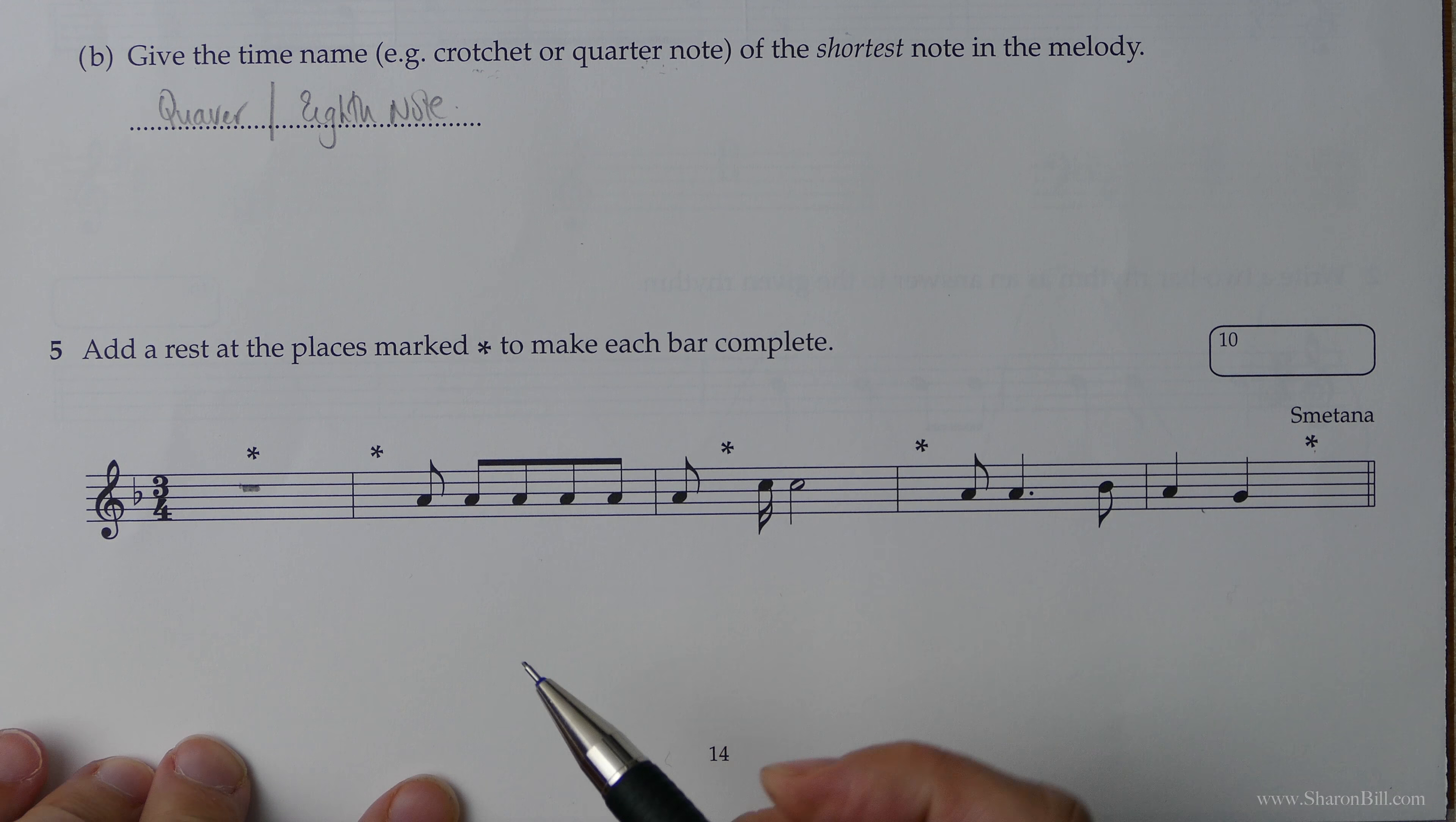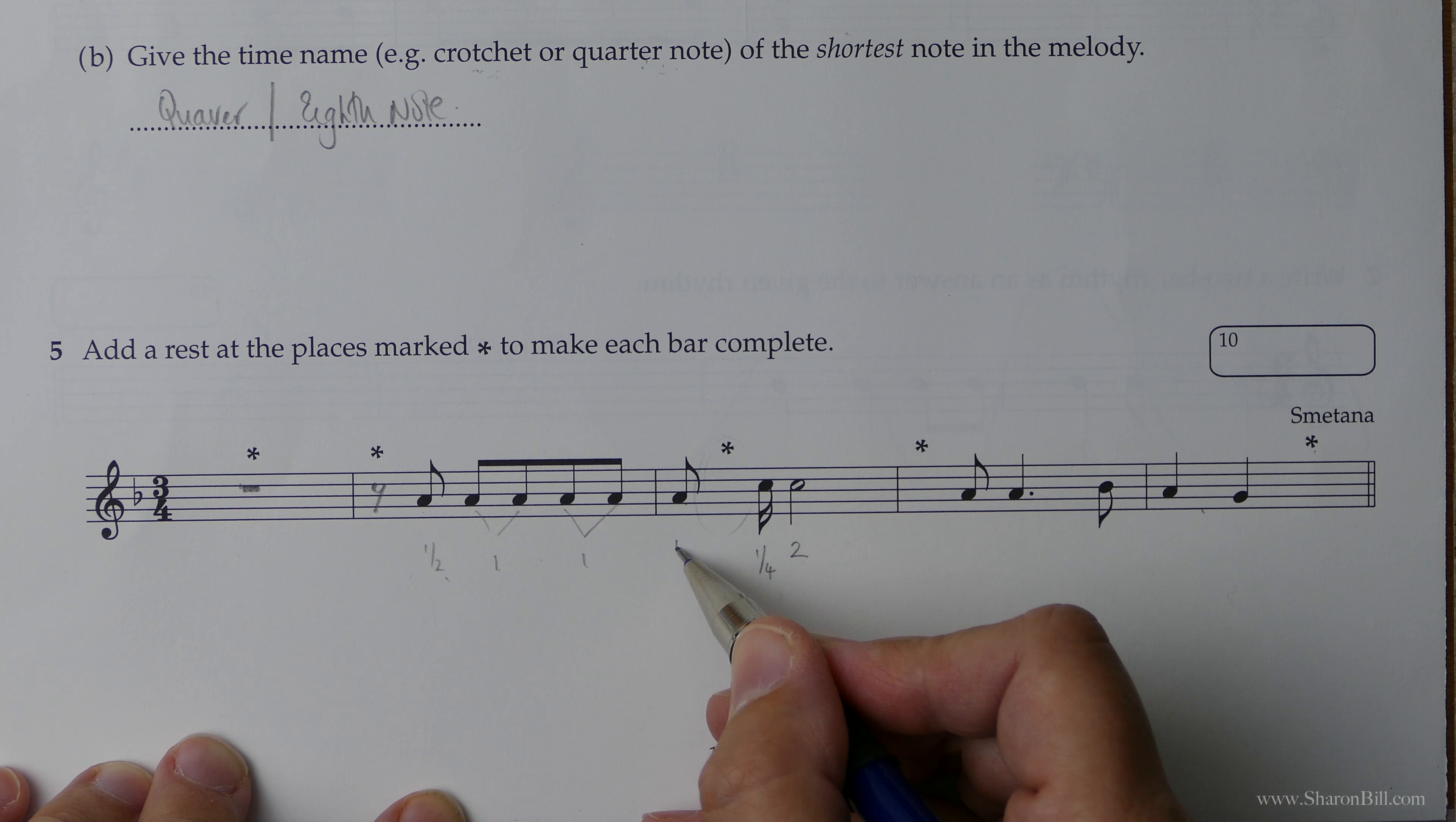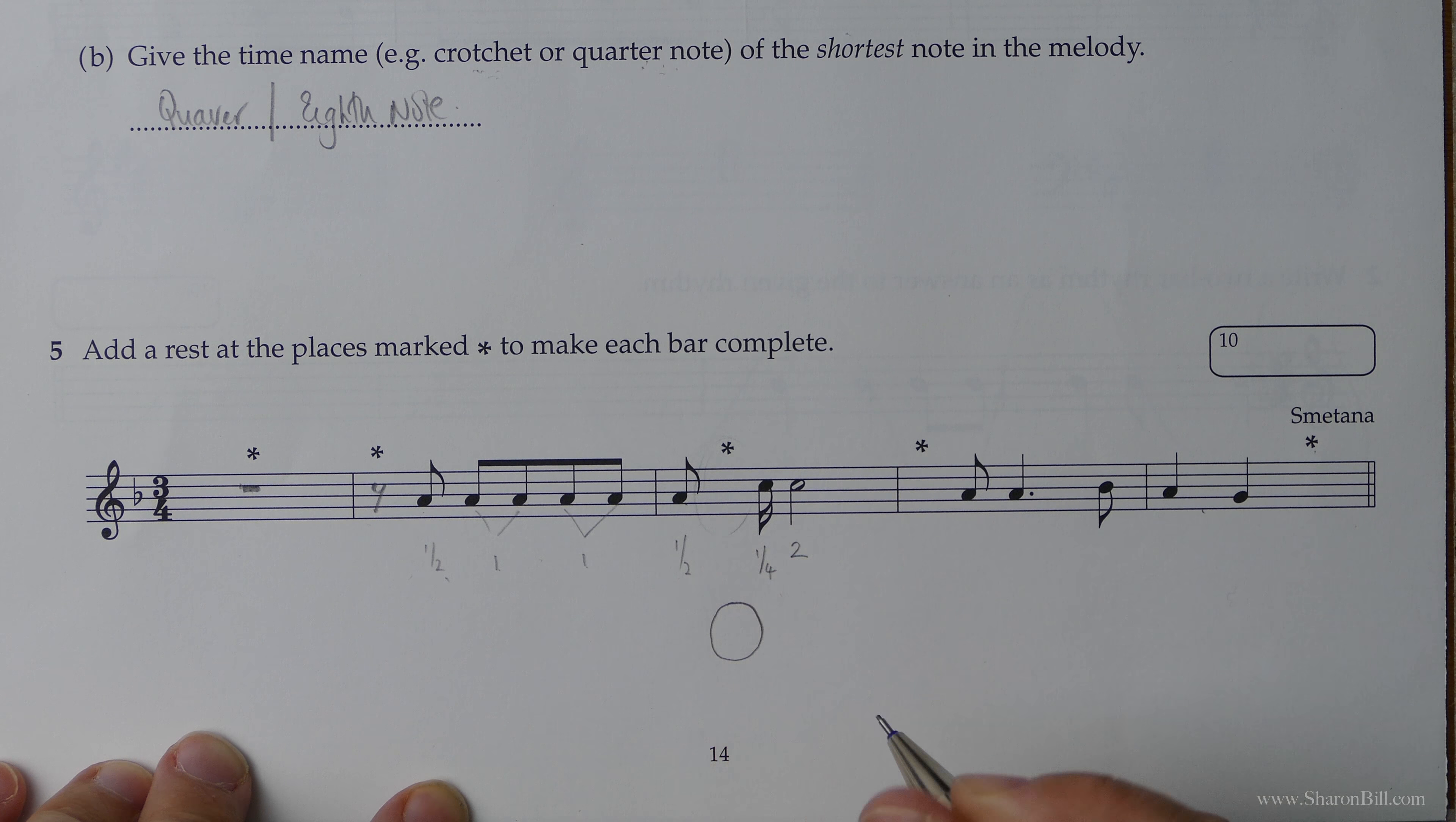Let's carry on. So we've got something missing here just squished in here. Let's see how many beats we've got so far. We've got a two beat note here. We've got a quarter of a beat here. And we've got a half of a beat here. So, so far we've got two and three quarters. If you find that maths difficult, like me I really struggle with maths.